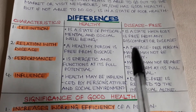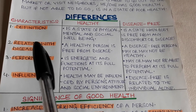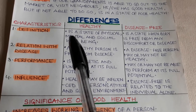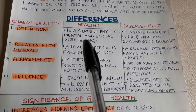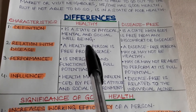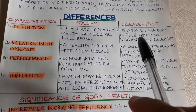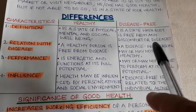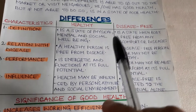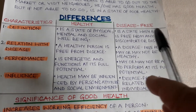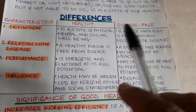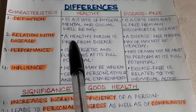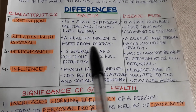Now let us see the differences between being healthy and being disease free. Number one — definition: health is a state of physical, mental, and social well-being, whereas disease free is a state when the body is free from any discomfort or disease. When we are free from any disease, we are in a state of good physical health — that is disease free. Number two — relation with disease: a healthy person is free from disease.